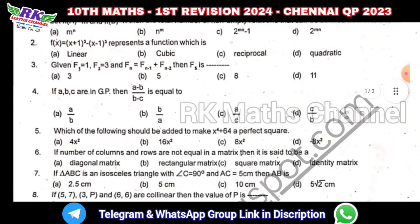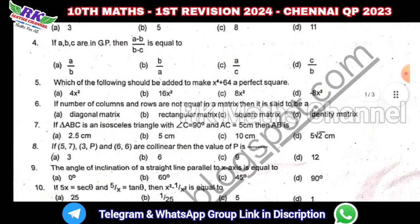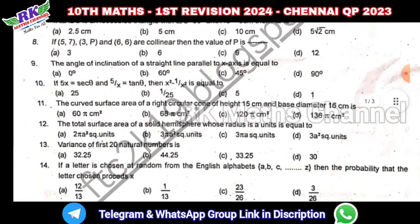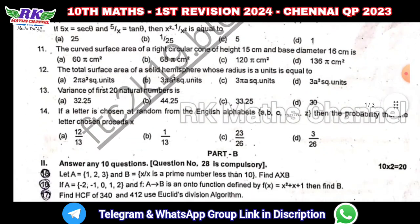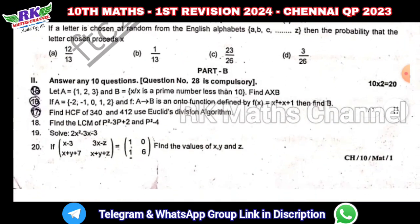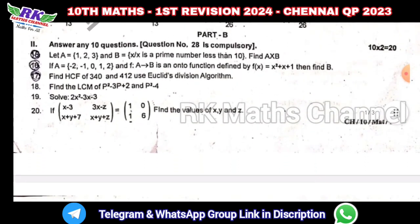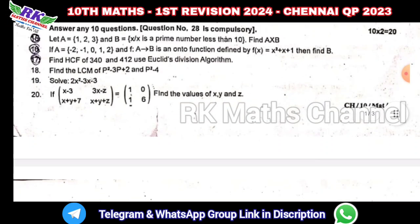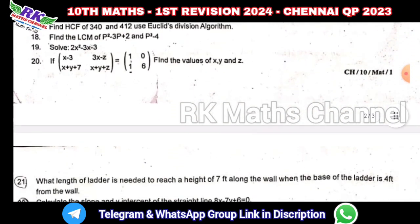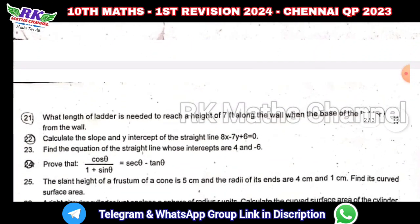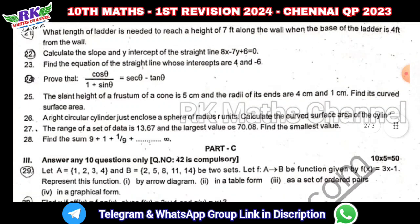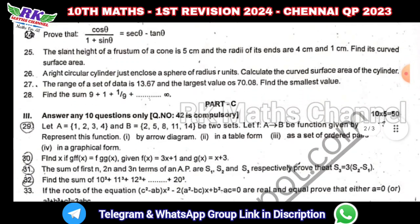So, the first one is 14.1 marks. That is Part B. There are 14 questions, and you answer 10 questions. Question number 28 is a compulsory question.